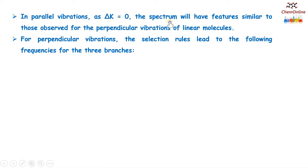For perpendicular vibrations of the symmetric top, the selection rules are delta v equals plus or minus 1, delta j equals 0, plus or minus 1, and delta K equals plus or minus 1. In the case of parallel vibrations, since delta K equals 0, the spectrum is independent of K and will have features similar to those observed for perpendicular vibrations of linear molecules.